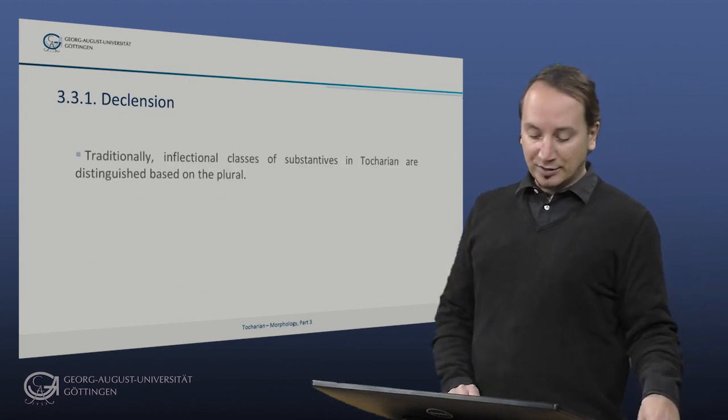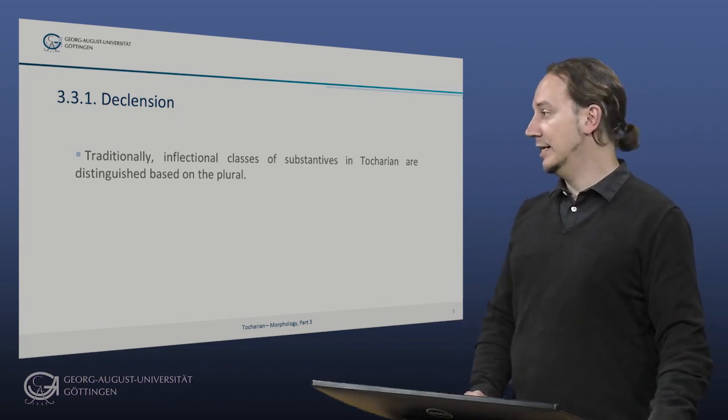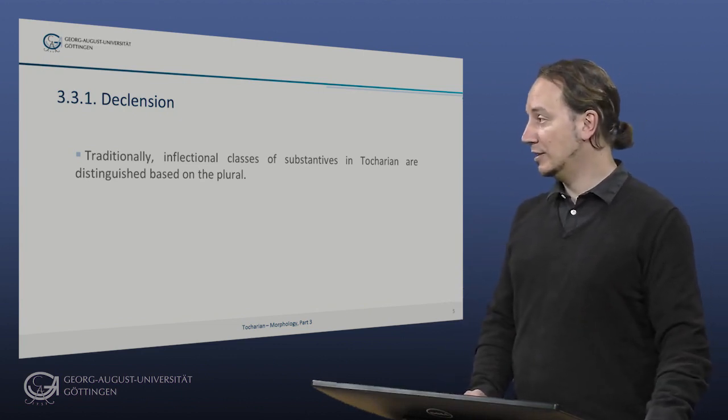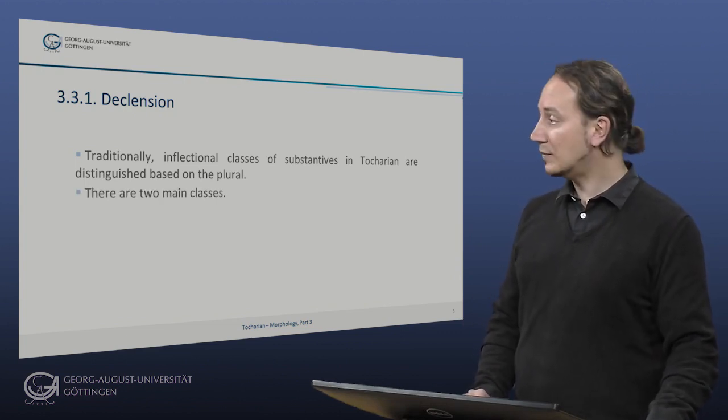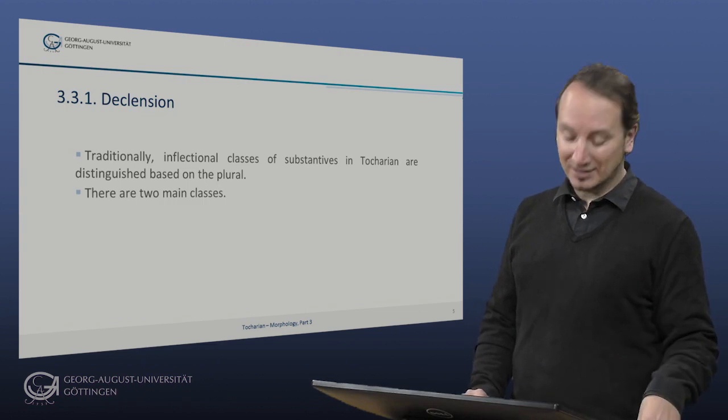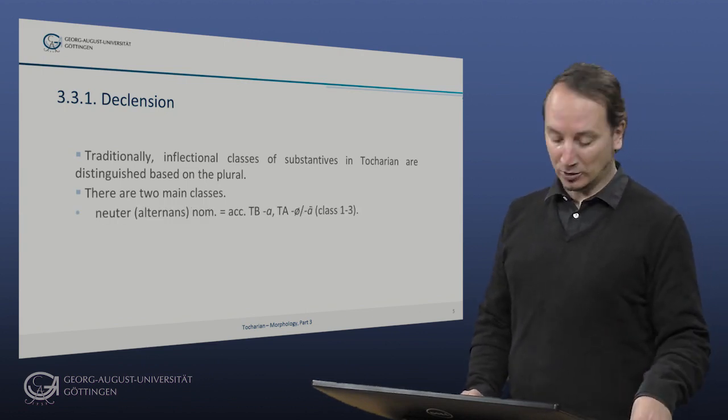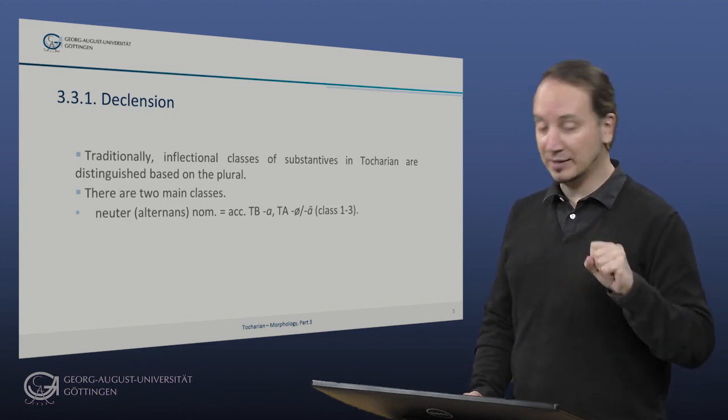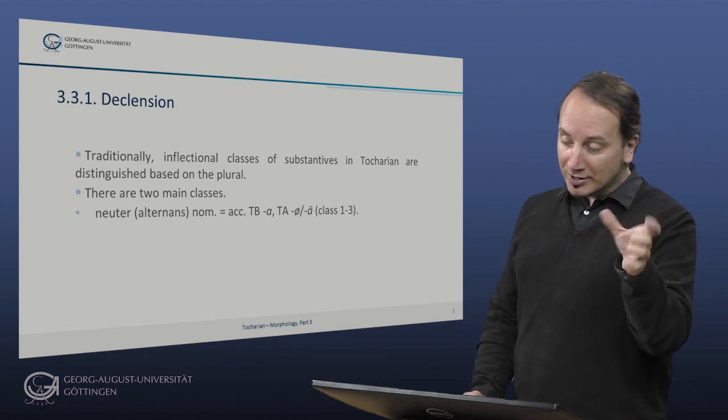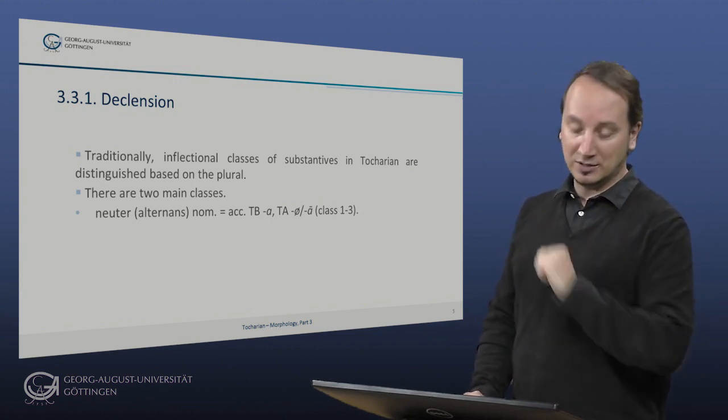Now let's turn to the different stem classes of Tocharian. Traditionally, inflectional classes of substantives in Tocharian are distinguished based on the plural. There are two main classes: neuter, sometimes also called alternans, because they basically alternate between masculine in the singular and feminine in the plural.